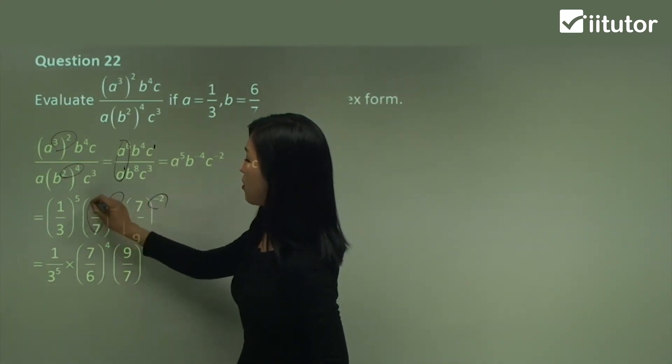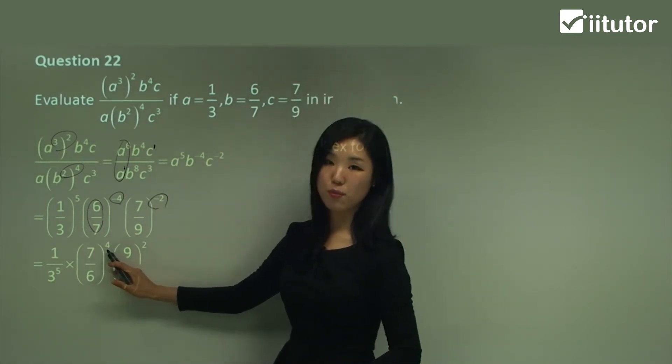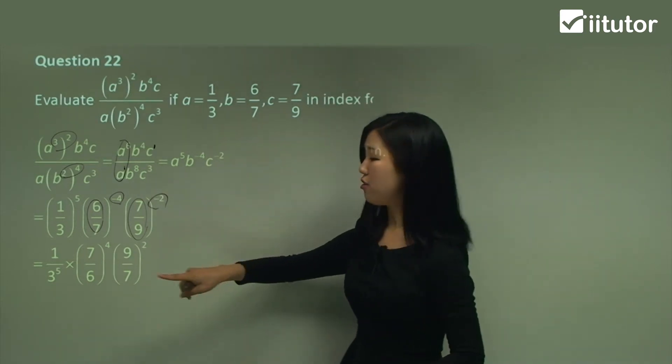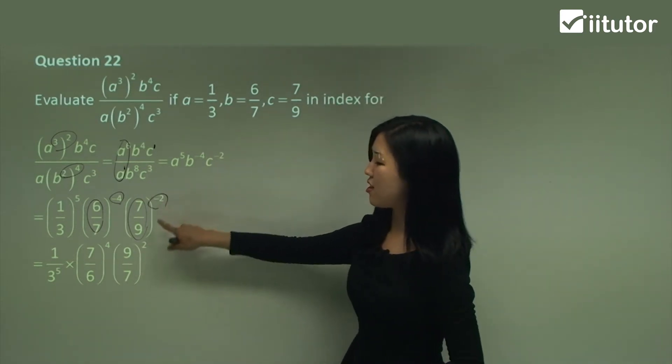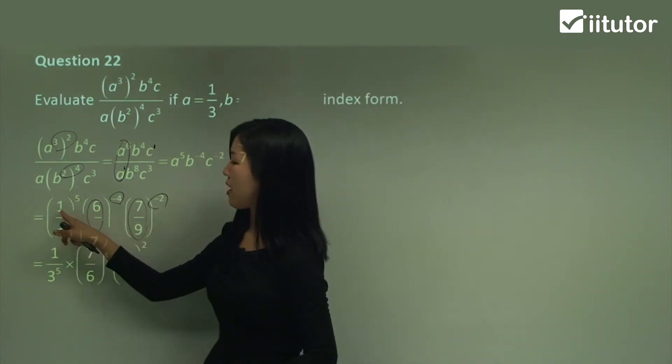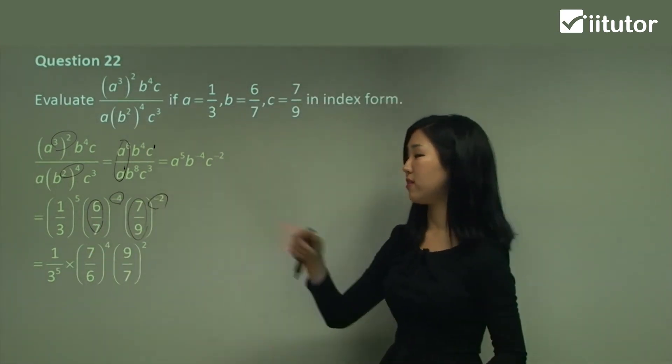So we reciprocal 6/7 and make it 7/6. And then we can change the power to a positive. Same with this. 7/9, flip it around and make it 9/7. And then you can make the power positive. And I just simplified this one, because that becomes 1 to the power of 5 over 3 to the power of 5. 1 to the power of anything is just 1, so I just left it as 1.